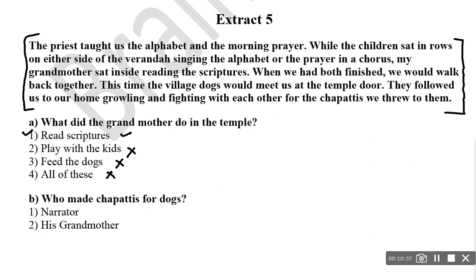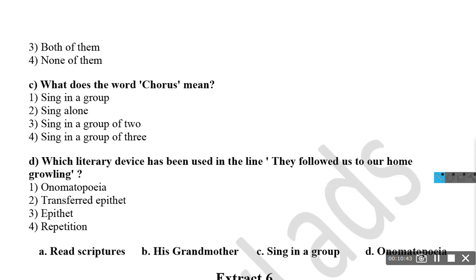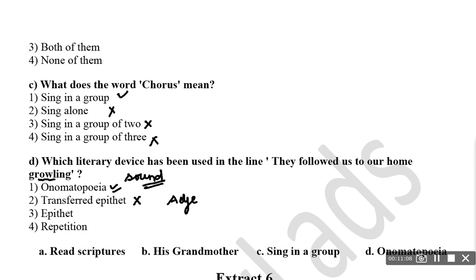Who made chapatis for the dogs? His grandmother. What does the word 'chorus' mean? Chorus means singing in a group — not alone, not two, not three. Which literary device has been used in the line 'they followed us to our home, growling'? Growling has a sound. Whenever a word imitates a sound, we have a literary device called onomatopoeia. It is not a transferred epithet and not repetition. The right answer is onomatopoeia. Correct answers: read scriptures, his grandmother, sing in a group, onomatopoeia.